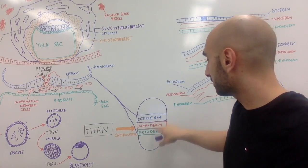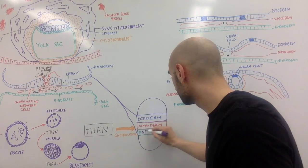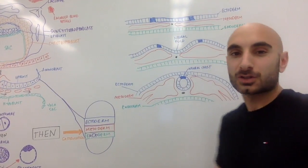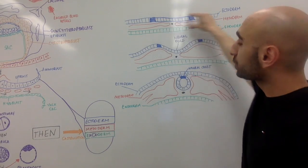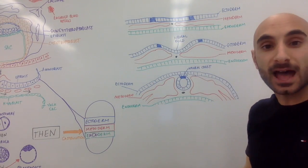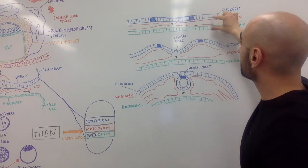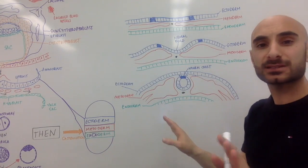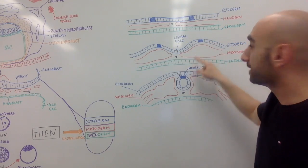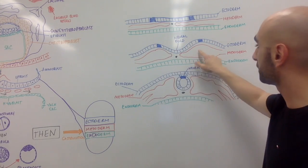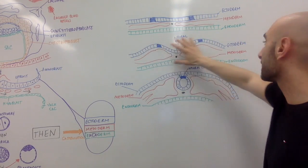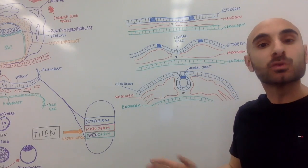Ectoderm, mesoderm, and endoderm — this will become you. With time, you'll have the neural fold here, and these are the neural crest cells, while this is still the mesoderm, and that's still the ectoderm. Don't let this scare you — this is just step one, that's the next step, this is step three, and there's a lot more — PhD level. We're keeping it simple so you get what embryology is.